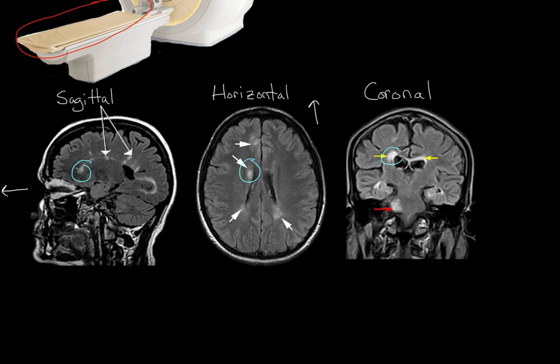These bright spots that they actually point out are referred to as lesions. A lesion is just a piece of damaged tissue. So if you think someone has multiple sclerosis and you have all these brain scans, the first thing you're going to look for are these bright spots.